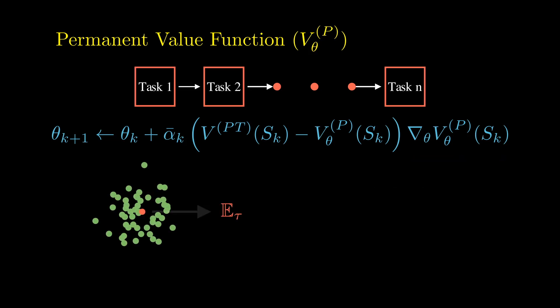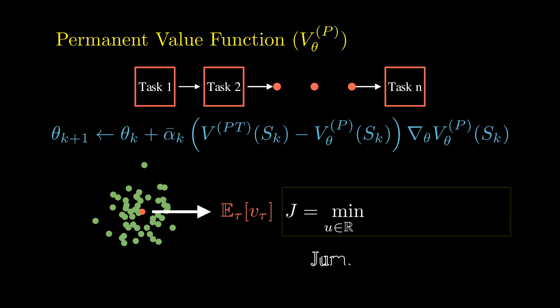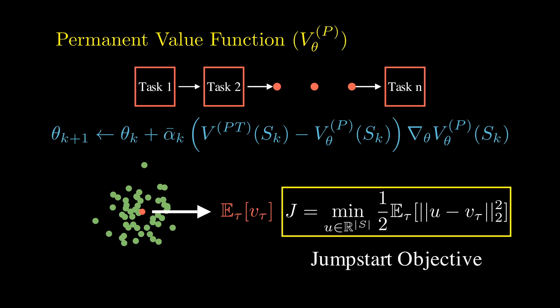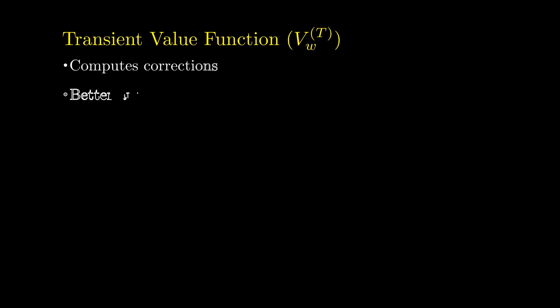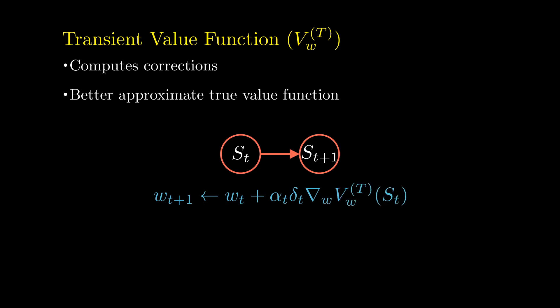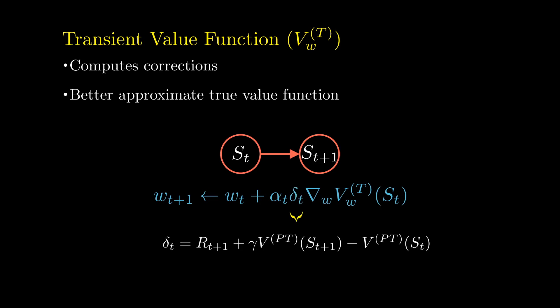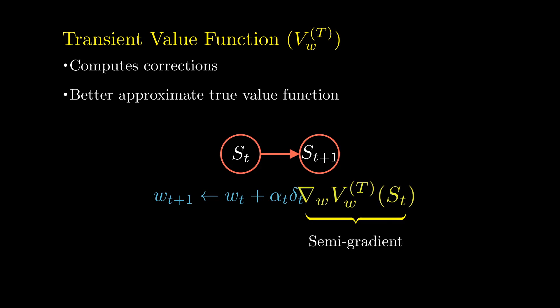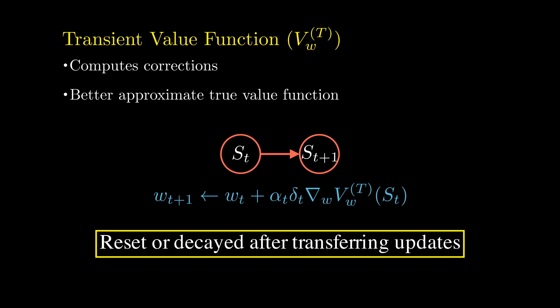The sequence of expected updates contracts to a unique fixed point which optimizes the jumpstart objective. The transient value function computes corrections on top of the estimates provided by the permanent value function in order to approximate more closely the true value function of the current situation. We update the transient value function in an online fashion using a semi-gradient update rule — the semi-gradient is with respect to the transient value function only, resulting in learning only the part of the value function not captured by the permanent component. The transient value function is reset or decayed after updating the permanent value function.